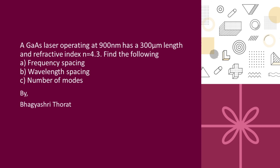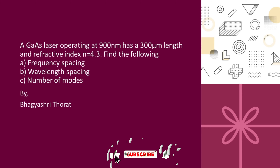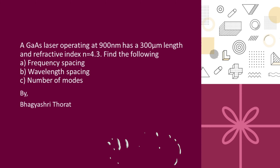Welcome back to my channel Pinnacle. Thanks for watching my previous video on bending loss and commenting that you want a solution for this problem: a Gallium Arsenide laser operating at 900 nm has a 300 micrometer length and refractive index n equal to 4.3. Find the frequency spacing, wavelength spacing, and number of modes. This is a very common question asked in GATE or various exams.